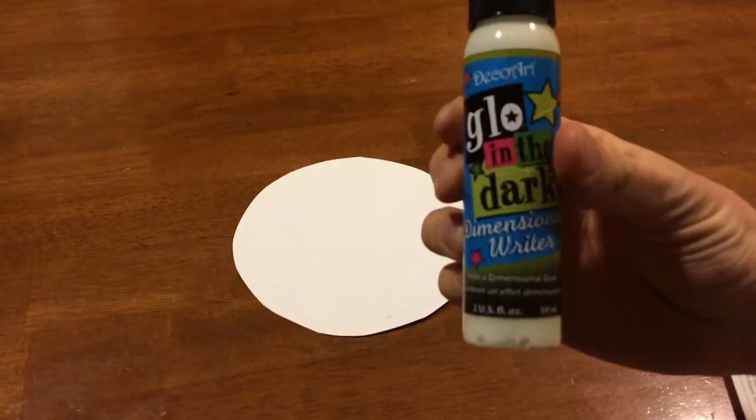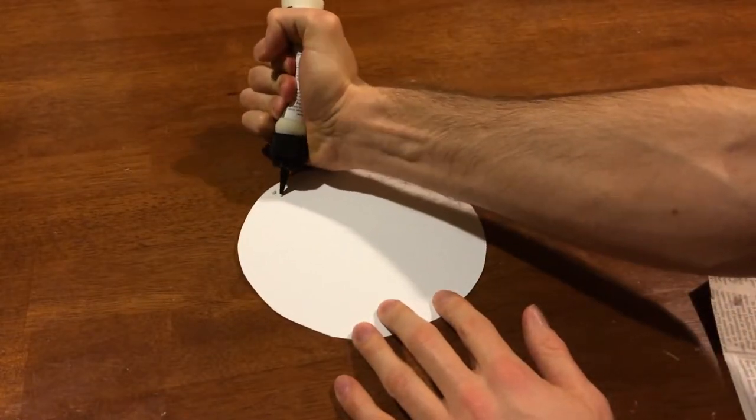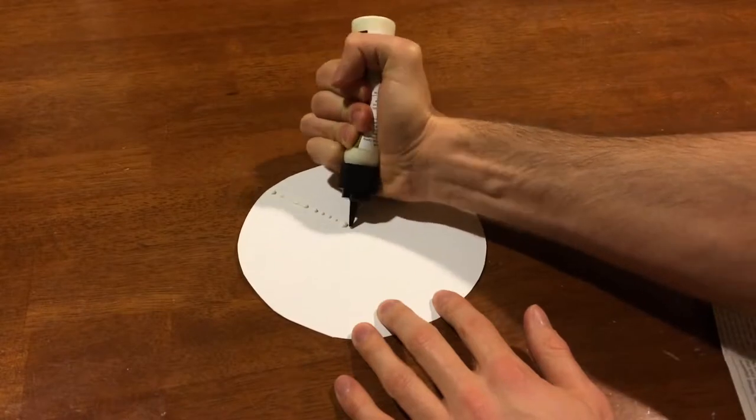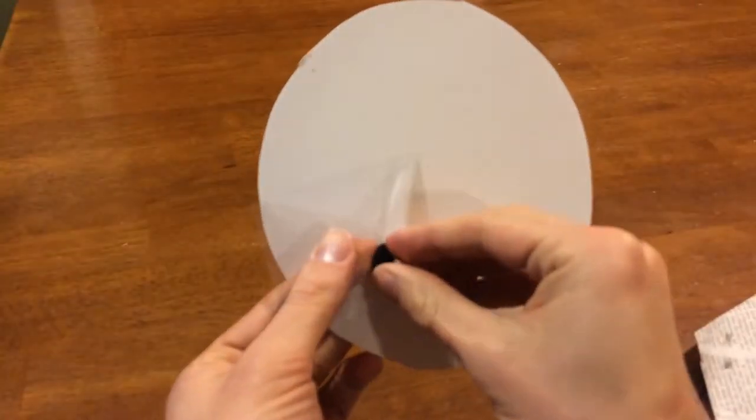Alright, grab the glow-in-the-dark paint and make your design. Once that's done, put a velcro sticker on the other side of the circular poster board.